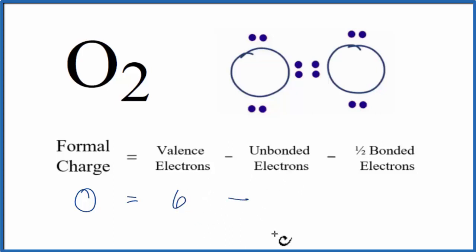Then we'll subtract the unbonded valence electrons. These are the electrons that aren't involved in a chemical bond. They're not between the oxygen atoms. So we have two, four of those.